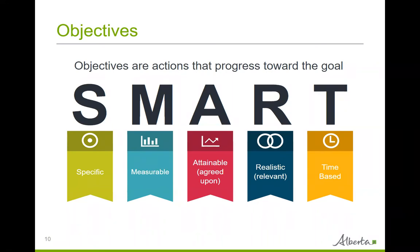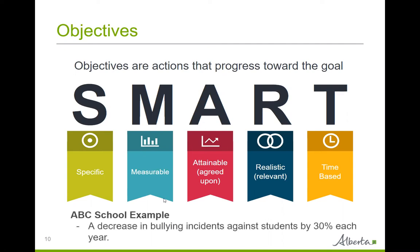So as you see, your objectives should be SMART. An objective that meets the SMART criteria will help focus your efforts and increase your chances of achieving it. Here is a SMART objective from the ABC school scenario: a decrease in bullying incidents against students by 30% each year. As you can see, it is specific, measurable, achievable, realistic, and timely — it is a good and realistic objective.